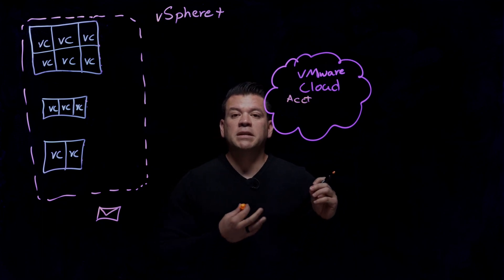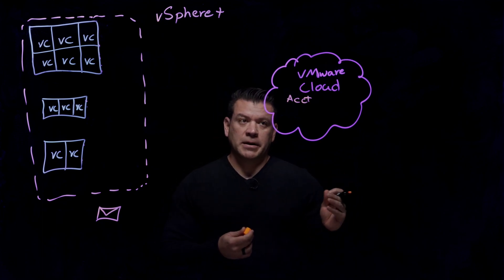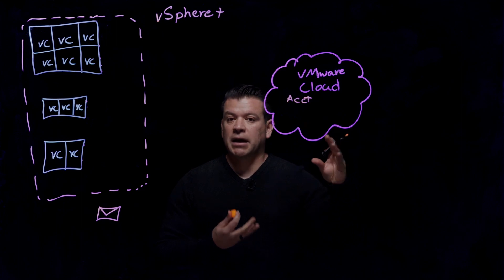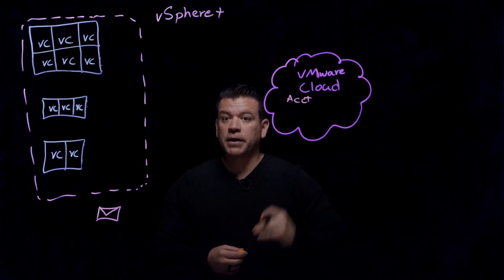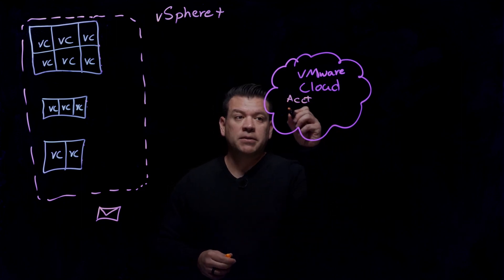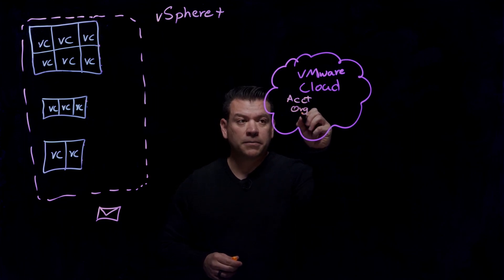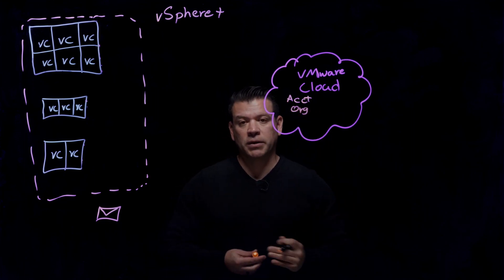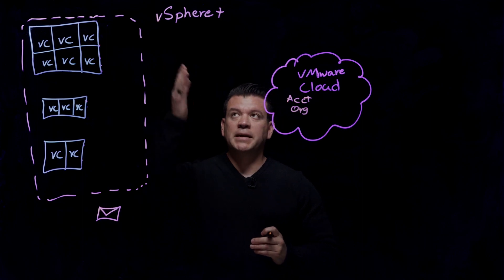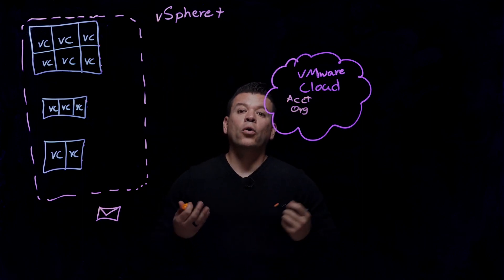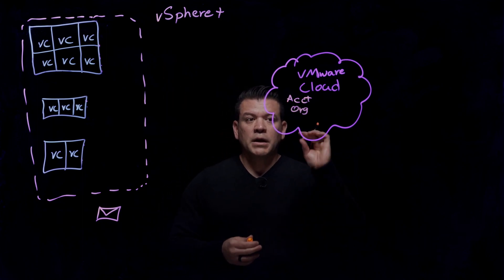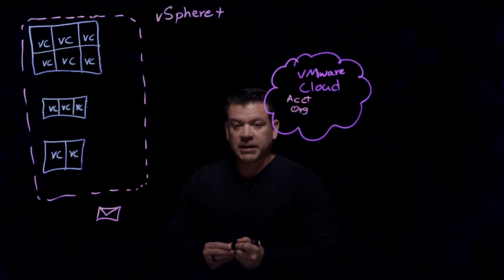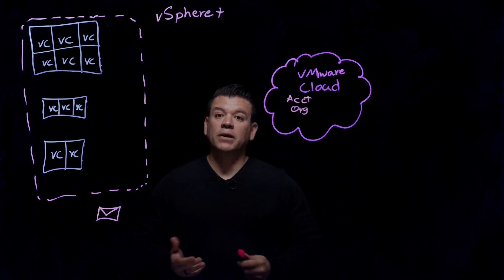So think about VMC and AWS, AVS, et cetera. So it is the same exact console. So if you have those services already, you already have an account. All you have to do now is to create an organization or enable an existing organization that has been entitled for vSphere Plus or vSAN Plus. Once you have done that, then the following steps are very easy and very quick.